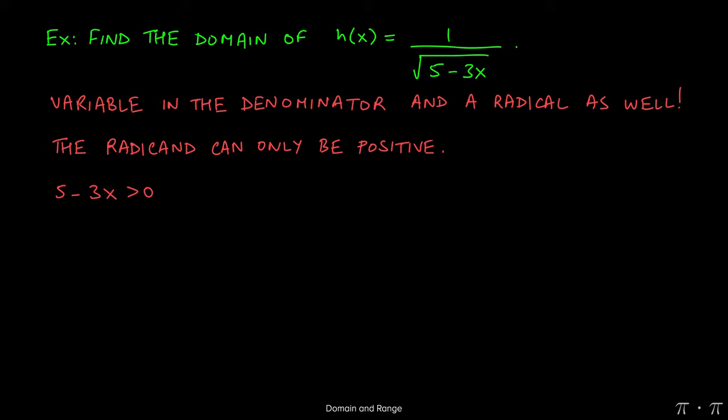We start by setting up this inequality: 5 minus 3x is greater than 0. We can subtract the 5 over to the other side and that yields negative 3x is greater than 0 minus 5, which is simply negative 5. Now the inequality negative 3x is greater than negative 5 can be solved by dividing both sides of the inequality by negative 3.